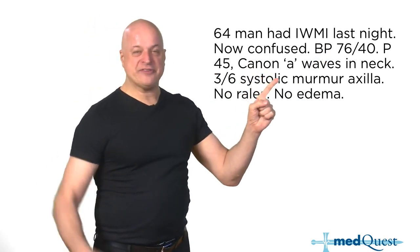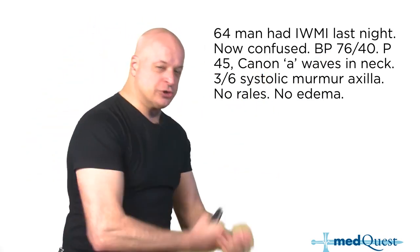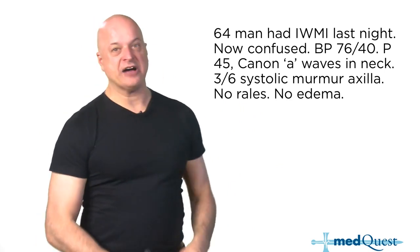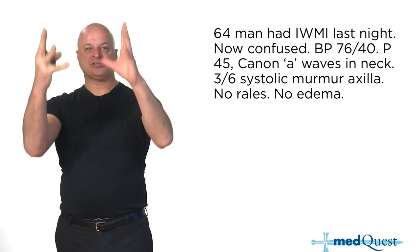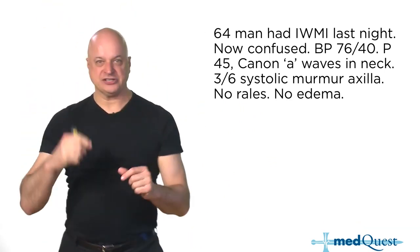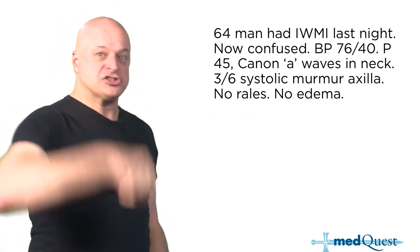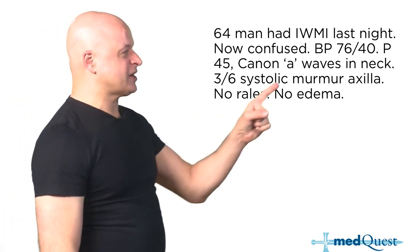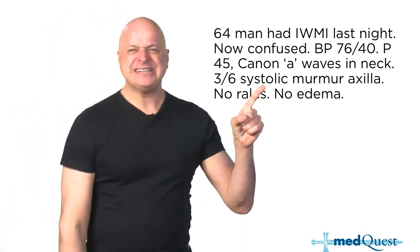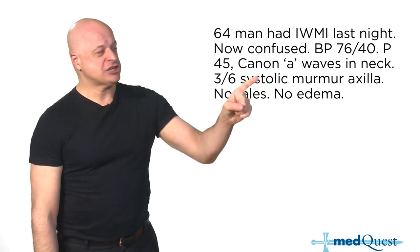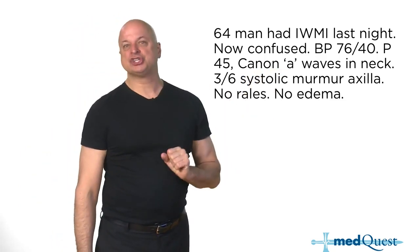A Cannon A wave is atrial systole against the closed tricuspid valve, so the blood is shooting backwards up into the neck veins. Atrial systole into a closed tricuspid valve — the blood's bounding backwards up into your neck. To the 19th-century man, that looked like a cannon shot.